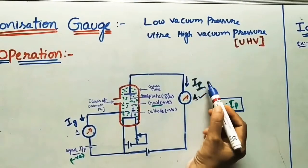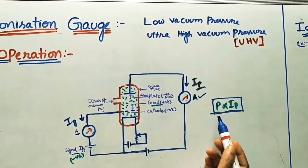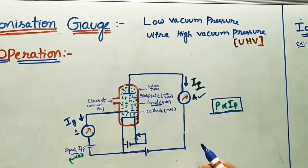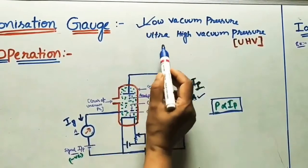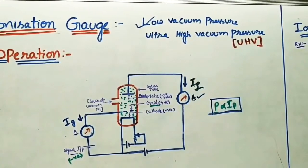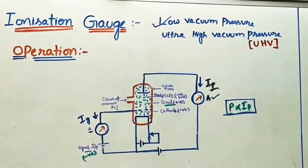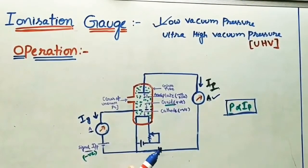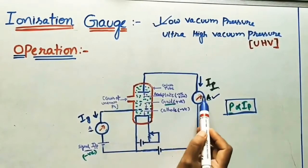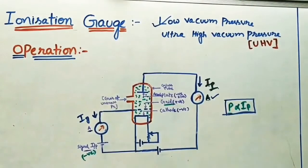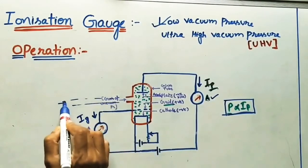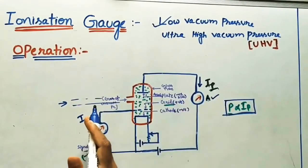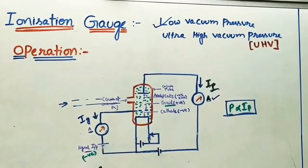Finally, the ion current IP will decide the pressure P value. For each and every gas, there is a separate calibrated scale. This is the main operation of the ionization gauge. The applications are: they are used to measure low vacuum pressure and ultra high vacuum pressure effectively. The advantages are it is very sensitive and gives very accurate values. The response is fast — whenever gas enters, it immediately gives a current value from which we can find P. Also, measurement can be done from a long distance; the gas can be supplied remotely while the ammeter and circuit are kept in a different room.